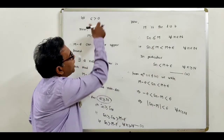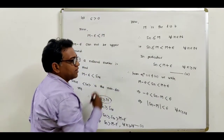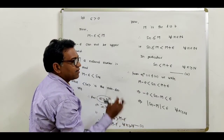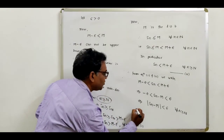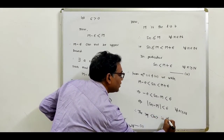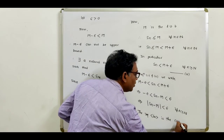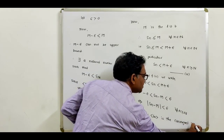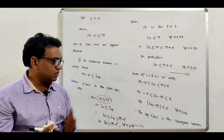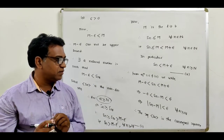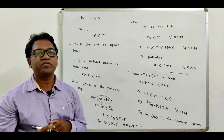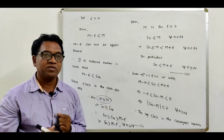We have shown that for every epsilon > 0, there exists a natural number N having the condition that |sn - M| < epsilon. Therefore the sequence sn is a convergent sequence. This completes the proof. The statement of the theorem is: if we are given a non-decreasing sequence which is bounded above, then it is always a convergent sequence. Thank you for watching.